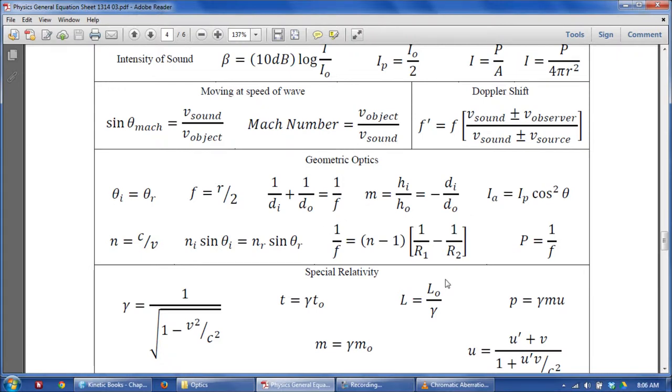You do have this lens maker's equation. This lens maker's equation is a little bit complicated. It describes how you would decide the focal length of the lens and how you would construct it based on those things. So, those are really our only new equations.